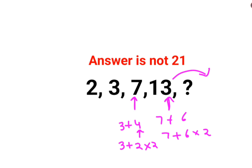So similarly, the next number should be written as 13 plus 7 into 2. So 13 plus 14. The answer for this question mark is supposed to be 27.